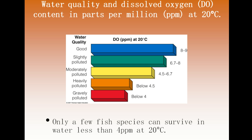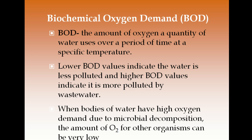When looking at dissolved oxygen content in parts per million, you want it between eight and nine for good water quality. Biochemical oxygen demand, or BOD, measures how much oxygen a volume of water needs to use over a period of time at a specific temperature. A low BOD indicates less-polluted water; higher BOD values indicate more pollution. If an AP exam question states the dissolved oxygen is at three, you know that's bad water quality by a lot.